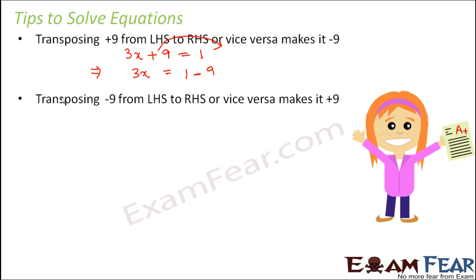Similarly, if we are transposing a negative number from one side to another then it becomes a positive number. In this case, let's take the previous example: 3x equals 1 minus 9. If you want to move this 9 from right hand side to left hand side, then 3x plus 9 equals 1 because 9 is moving to the other side so minus will become plus.